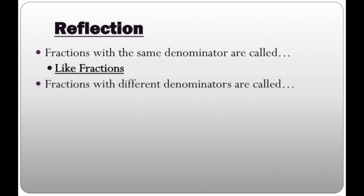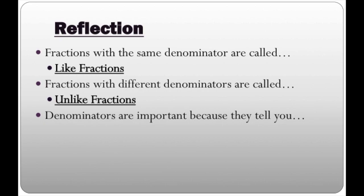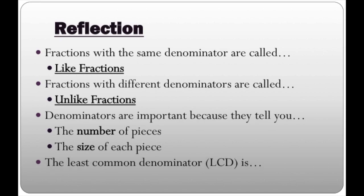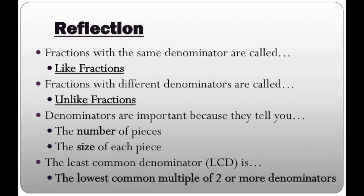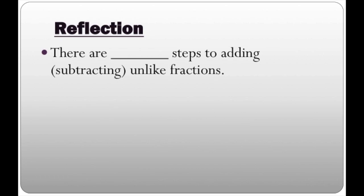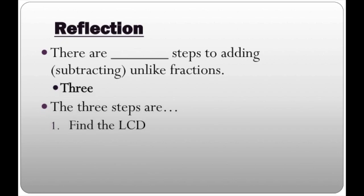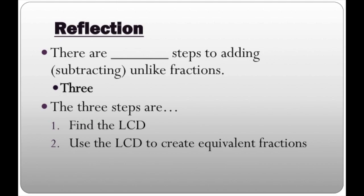A reflection: fractions with the same denominator are called like fractions. Fractions with different denominators are called unlike fractions. Denominators are important because they tell you two things — the number of pieces and the size of each piece. The least common denominator (LCD) is the lowest common multiple for two or more denominators. There are three steps to adding or subtracting unlike fractions: 1. Find the LCD. 2. Use the LCD to create equivalent fractions. 3. Add or subtract the numerators.